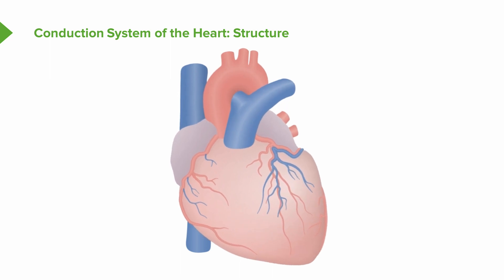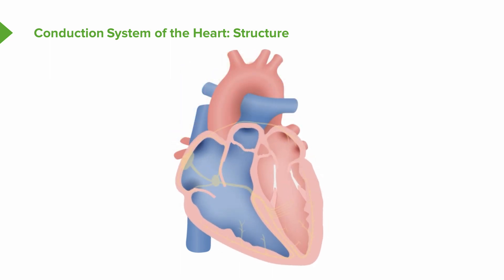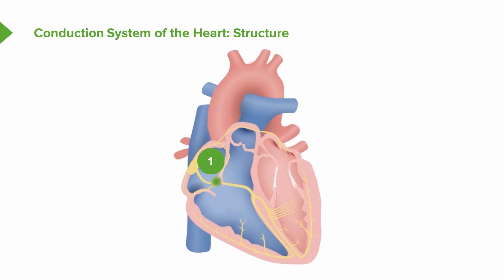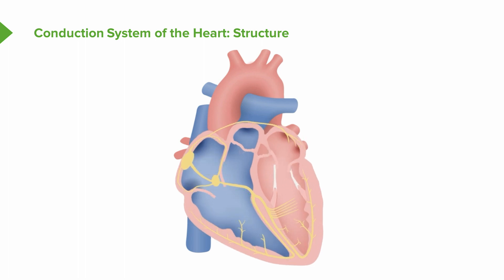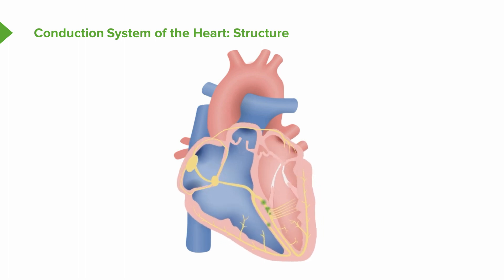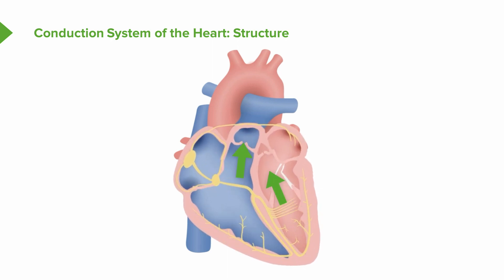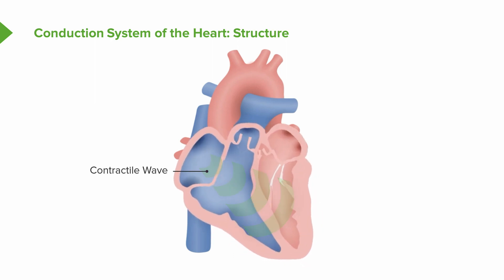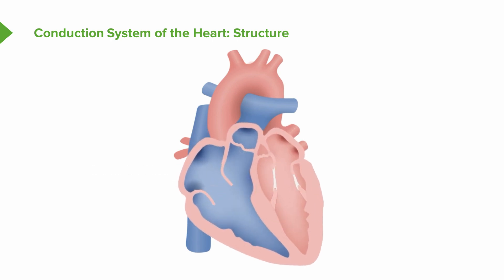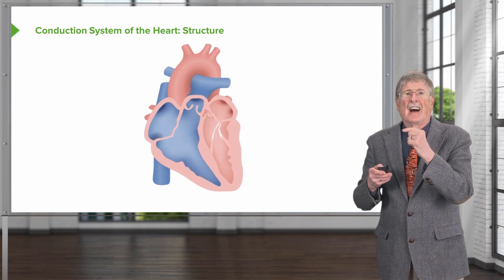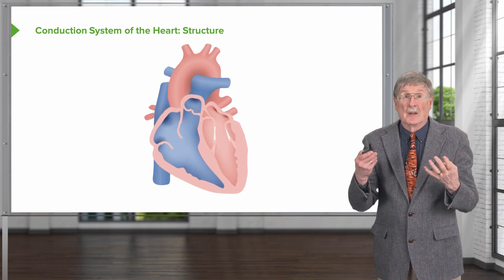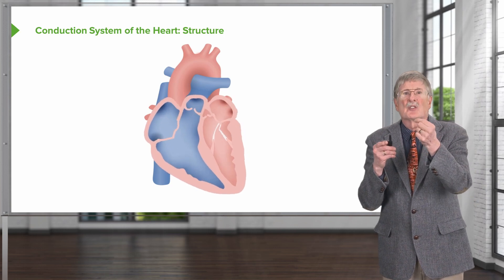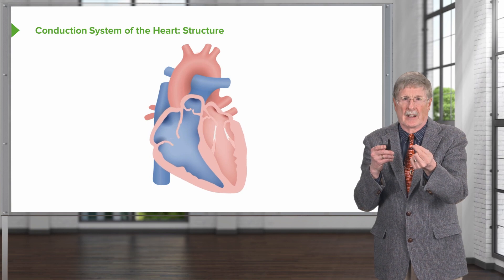It's important to understand the way that the heart is wired and how we get a conduction wave that allows first an atrial contraction and then a ventricular contraction. The ventricular contraction actually has to start down at the apex, so we squeeze blood up. Those are the general organizing principles. To get a contractile wave, we need to fire from cell to cell to cell, and the rhythm of that contractile wave happens intrinsically through what's going on in individual cardiac myocytes.